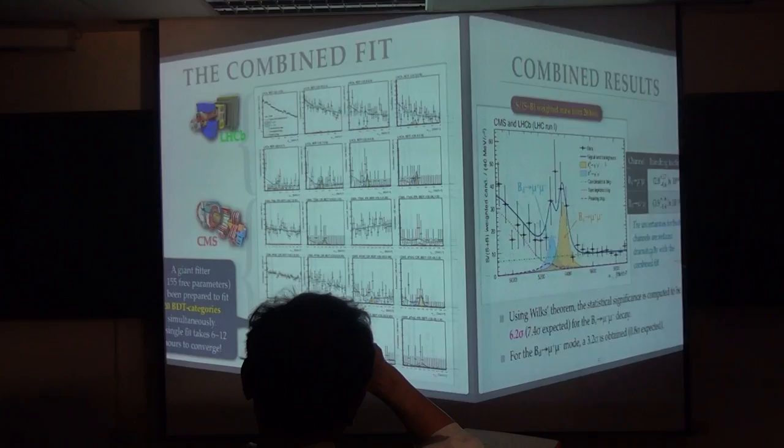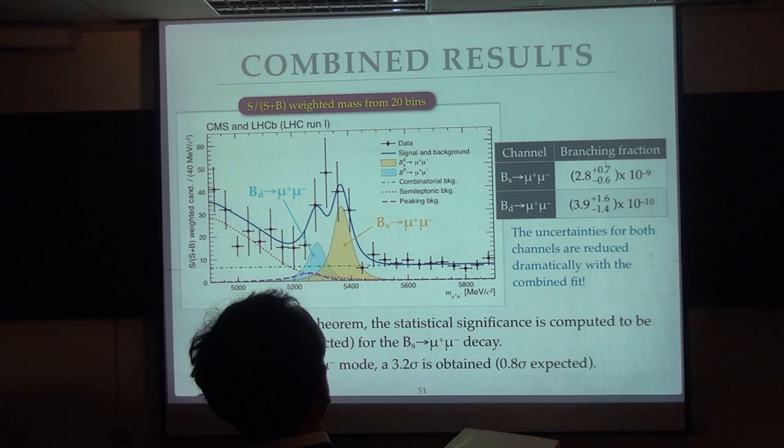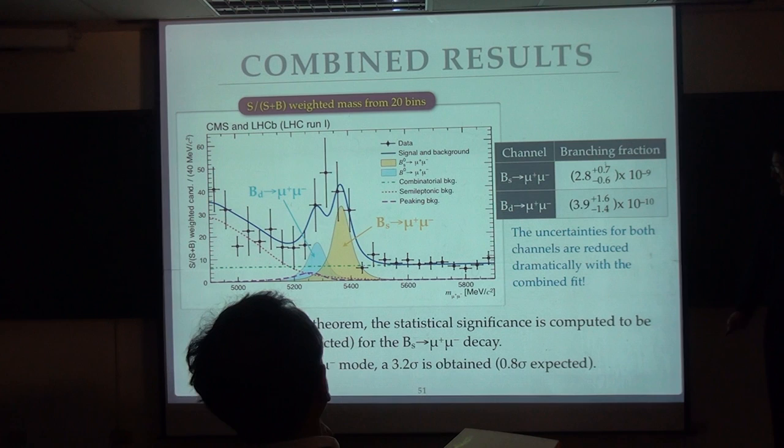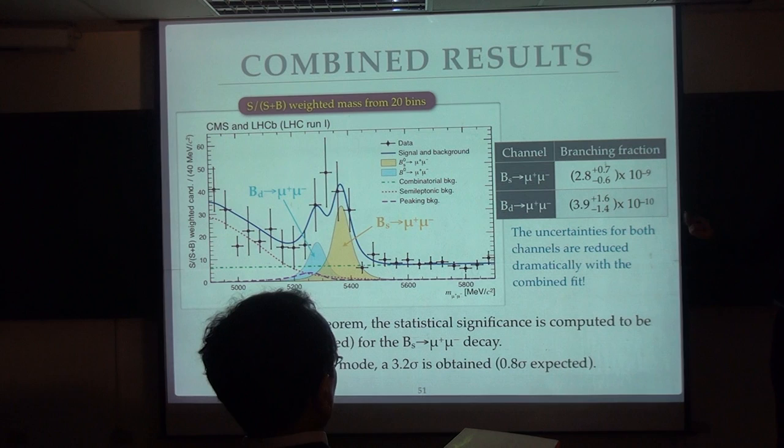So, this is the final plot. 20 things together. So, it's a very nice plot, right? So, this is the BS, to mu mu, and the BD peak. And, the combined value gives us, like, 6.2 sigma. Although, we're expecting 7.4. Because, we are actually always measuring something smaller than the standard model prediction.